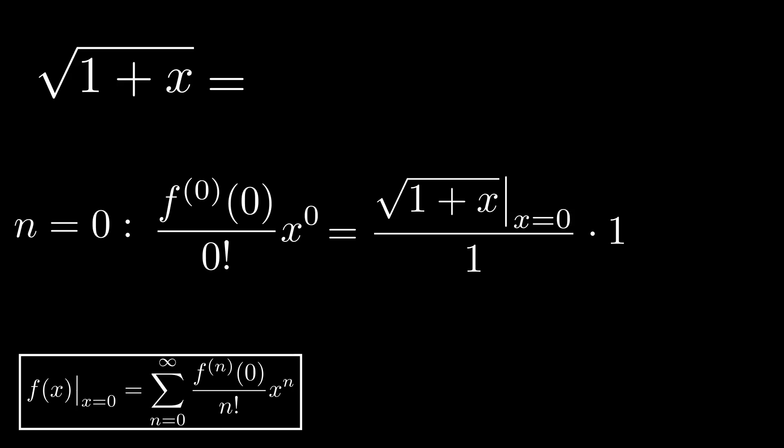Filling in x is equal to 0 in the numerator yields our first term, simply 1. And this is called the 0th order Taylor expansion of our particular function.